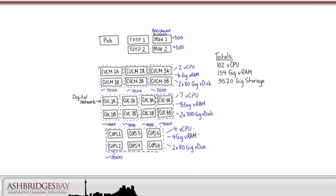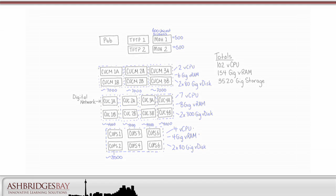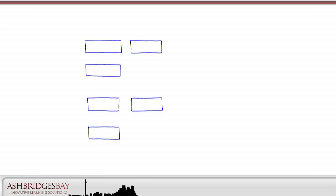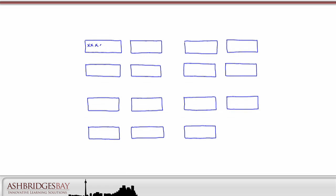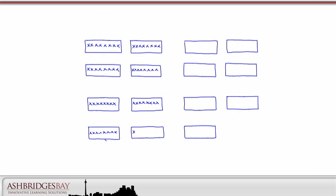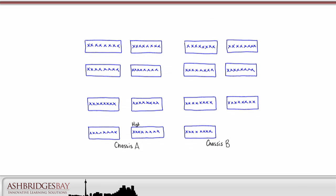How many servers and chassis do we need? The number of vCPUs is the deciding number. We need 102 vCPUs, so that means we need 102 cores, plus an extra core on each server running Unity Connection. Let's say we need 110 cores to include the ESXi scheduling. That means we need 14 8-core servers. We'll deploy an extra blade for HA, and we need two chassis for this deployment.